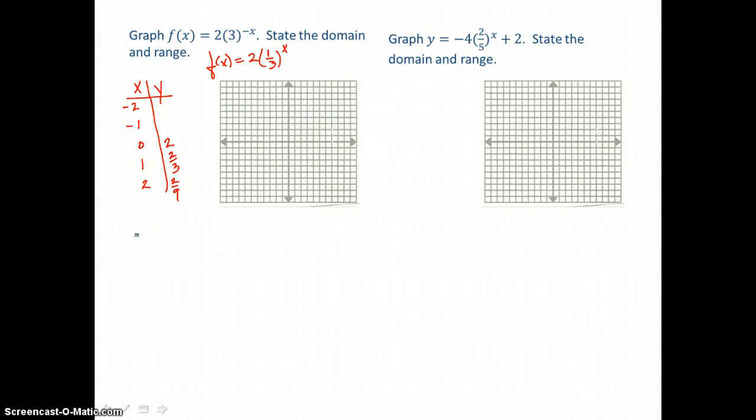Now let's go the other direction. And let's put negative 1 in for x. So that we have 2 times 1 third raised to the negative 1 power. Now again, to get rid of that negative exponent, we need to invert that fraction, its reciprocal, and make the exponent positive 1. So we just have 3 to the 1st power, which is 3. And 2 times 3 is 6. So we get 6 for our y value.